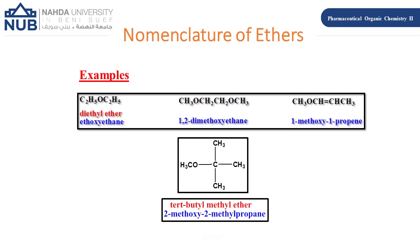The next example is tert-butyl methyl ether, which is a common name. For the IUPAC name, we choose propane as the main chain with a methyl substituent, giving the full name 2-methoxy-2-methylpropane.